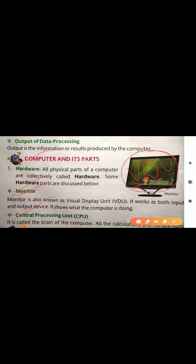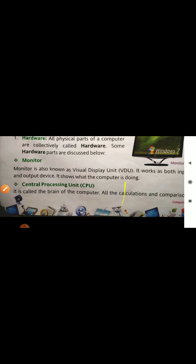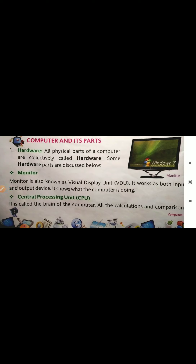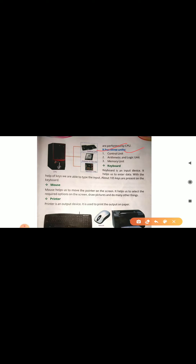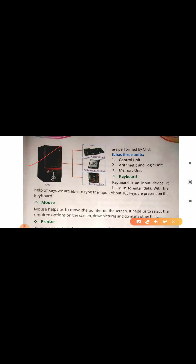Whatever work the computer is doing, we can see it on the monitor. Next, we have the CPU — central processing unit. It is called the brain of a computer, does all the calculations and comparisons. The CPU has three units: control unit, arithmetic logic unit, and memory unit. The control unit controls all the functions of the computer, all the calculations are done in the ALU, and the memory unit stores your data.